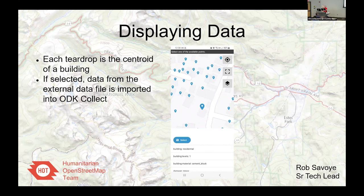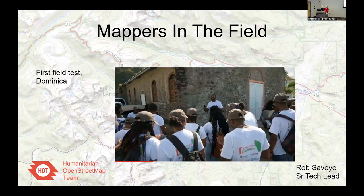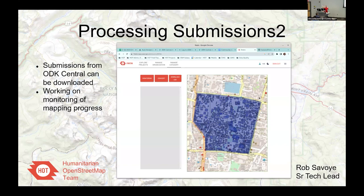Here's ODK Collect on my phone — each teardrop is a centroid of a building from the data extract. When I touch one of those teardrops I get all the existing OSM tags. Since you're pulling coordinates from OSM you don't have to wait for GPS satellite connections, so mapping an entire town is really fast. Here's another example of an imagery base map — very useful, and all this works offline. This is one of our initial field tests last month in the Dominican Republic — the first time a whole group of random people took a quick training and went out to map with it.